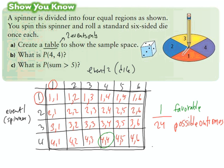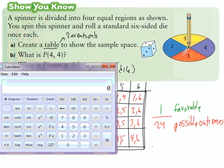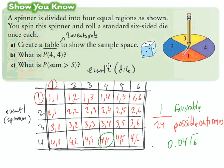One divided by 24 as a decimal is 0.0416 repeating, or approximately 4.2 percent. So the probability of spinning a four and rolling a four is about 4.2 percent — meaning 95.8 percent of the time you're not going to get that, so the probability of that happening is not great.